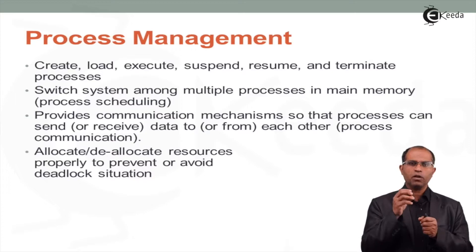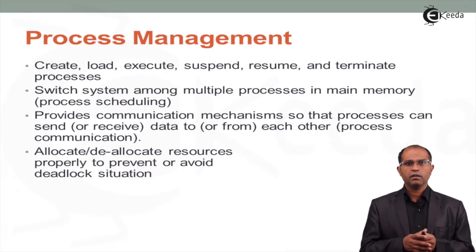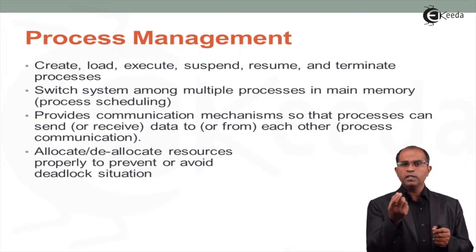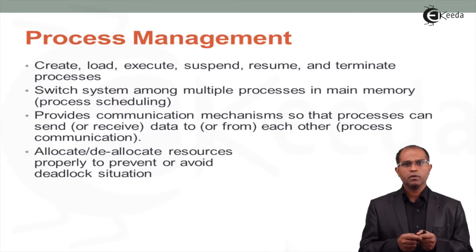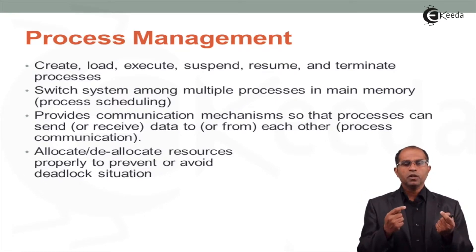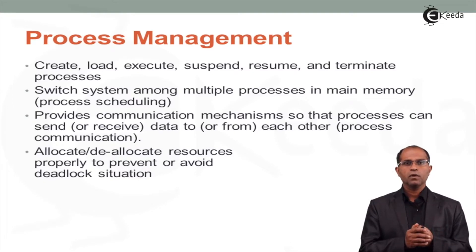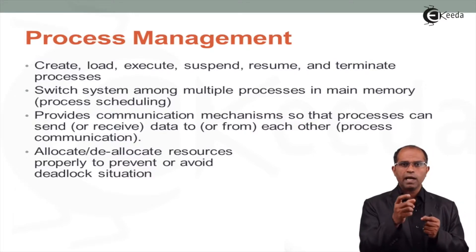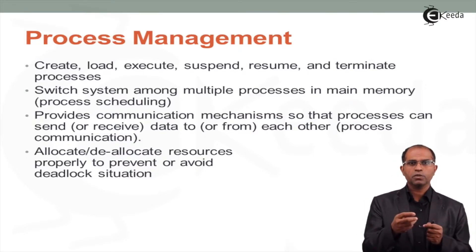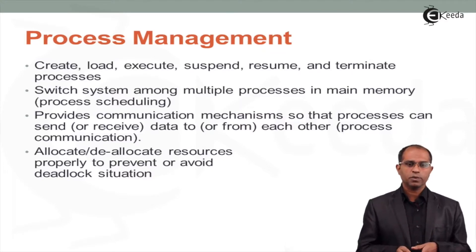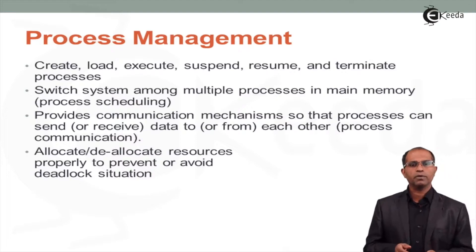A deadlock situation occurs when one process keeps using resources for a very long period, or when a common resource is needed by multiple processes. Process one and process two both try to acquire that common resource simultaneously. In this contention, neither may be able to access it, or one holds it for too long while the other waits. This contention state is called a deadlock situation, and the OS must be designed to avoid it.